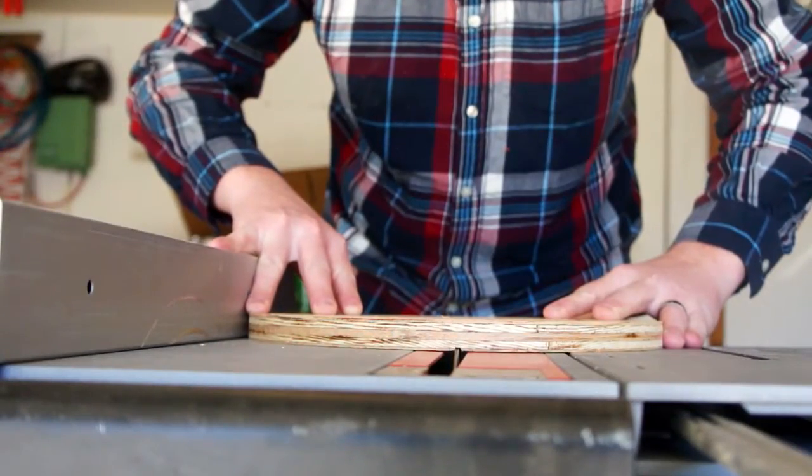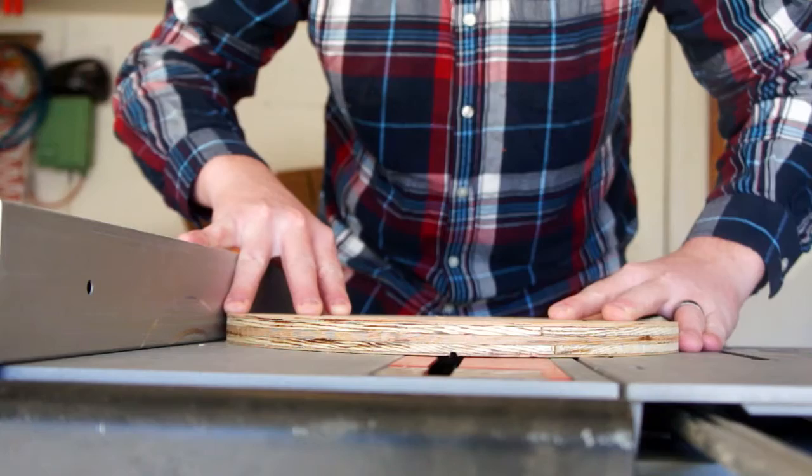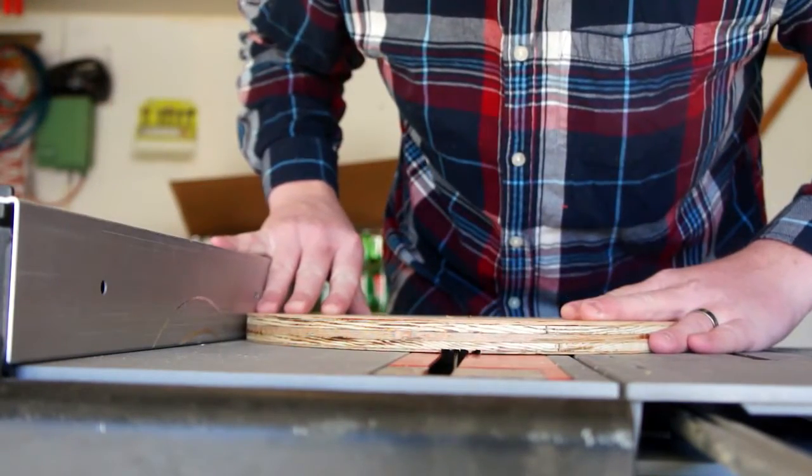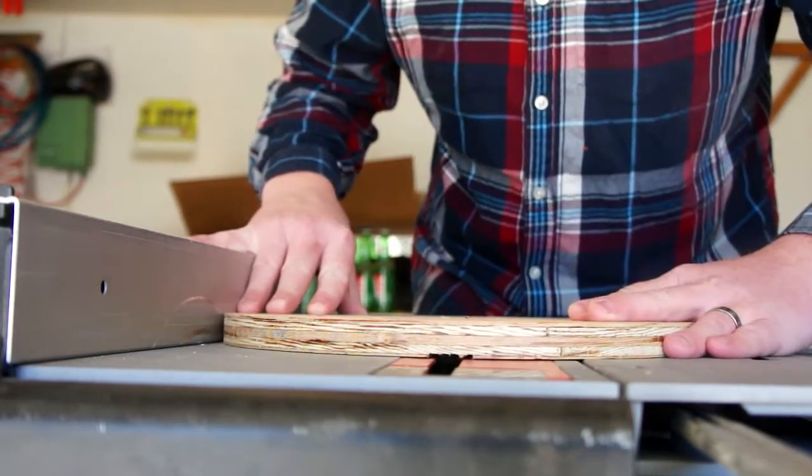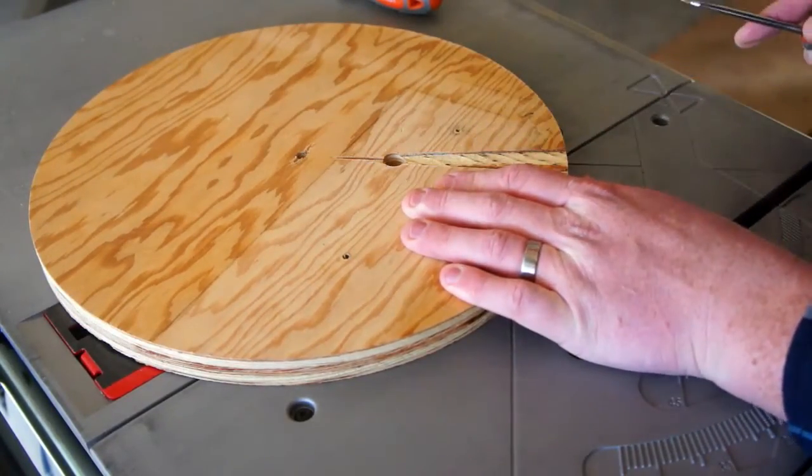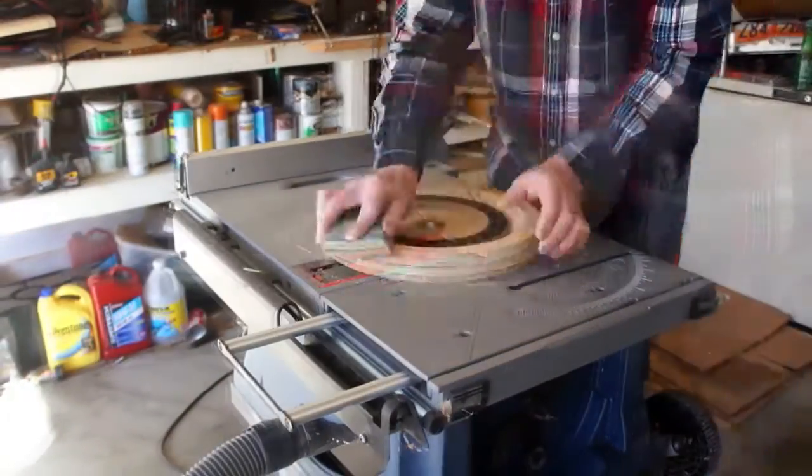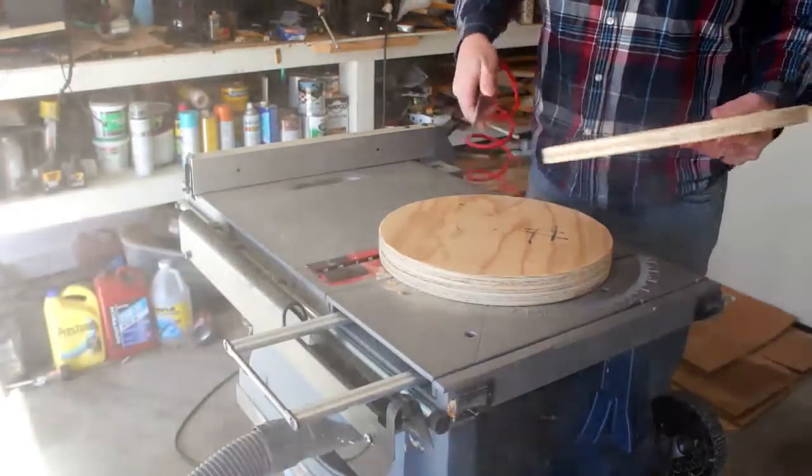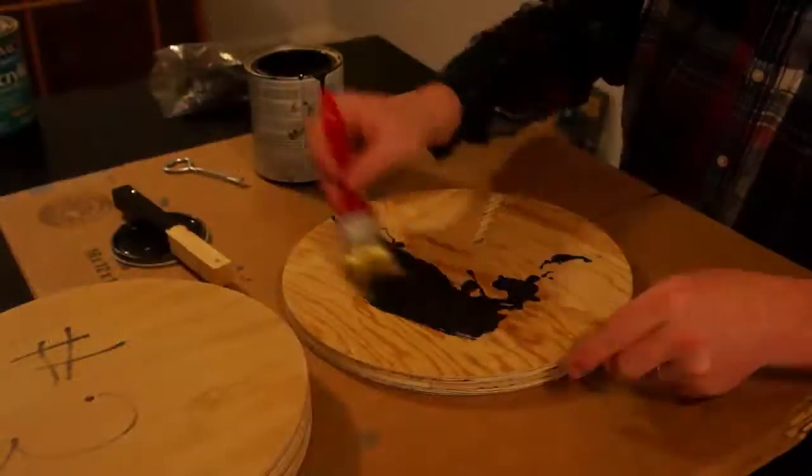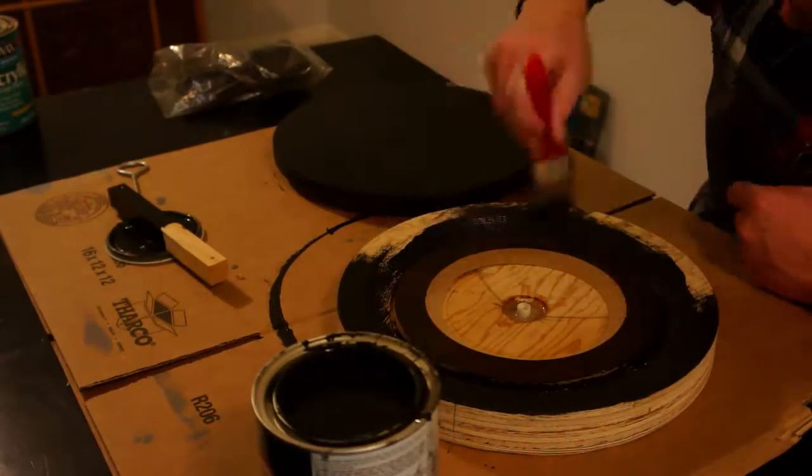Next I use my table saw to cut out a groove for the power cord. I quickly realized this would have been easier to do when the circle was still a square. Nonetheless, I crack on and use a flat head screwdriver to chisel out anything left over. Next I prep everything for painting by sanding all surfaces and using my compressor's air gun to remove any sawdust. I then apply three coats of black eggshell paint to all visible surfaces.